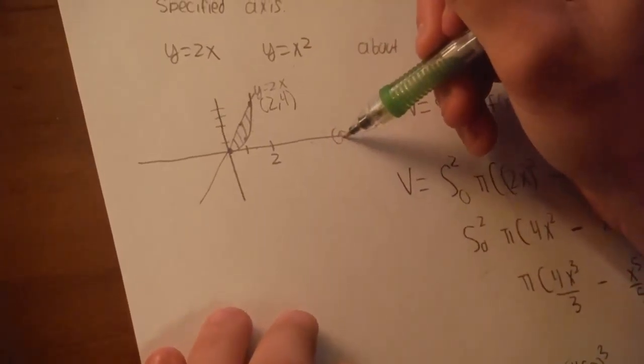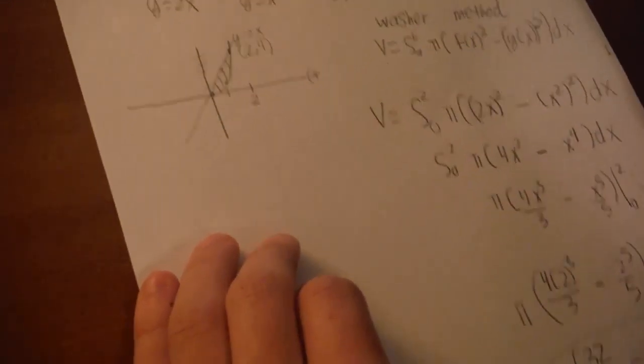Then it's just simplifying, so we got common denominators and such. But essentially, this is the answer. This is the volume of the curve area over here being around the x-axis.